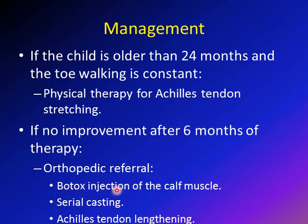The options are Botox injection of the calf muscle. Botox is a botulinum toxin that causes neuromuscular blockade, which will cause weakness of the plantar flexors. This should be combined with physical therapy for stretching of the Achilles tendon. Another option is serial casting, where the child is put in a short leg walking cast with increasing dorsiflexion in each cast. The last option is Achilles tendon lengthening surgery, which is reserved for resistant cases.